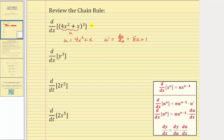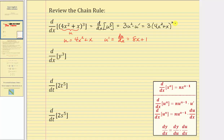So if we wanted to, we could rewrite this as the derivative with respect to x of u to the third, which is equal to three u squared times u prime, or three u squared times du dx, which in this case is equal to three times the quantity four x squared plus x, squared, times the quantity eight x plus one. This is the same idea we need to apply when performing implicit differentiation, when a term uses a variable different than the input variable.